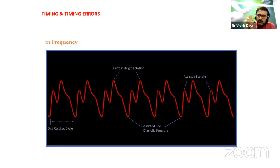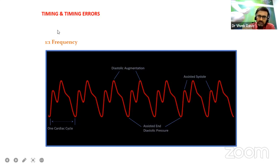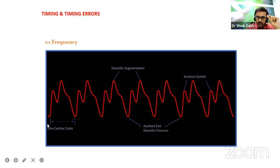Whenever the patient is in severe cardiogenic shock and you have put the patient on IABP, the IABP will give adequate rest to the cardiac cycle and the heart. To begin with, there is a frequency of one-to-one — just like putting the patient on ventilator in assisted control ventilation and then gradually weaning. In one-to-one frequency, for all cardiac cycles and all beats, the balloon will inflate and deflate. You can see continuous diastolic augmentation with all pulses in one-to-one.